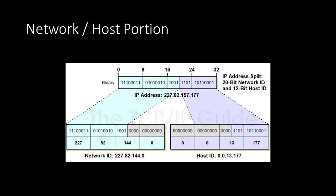IP addresses are composed of two parts: a network portion and a host portion. The bits of an IP address designated for the network portion uniquely identify the network, while the host portion allows all devices on the network to share the same prefix. By decreasing the number of bits in the network portion, you allocate more bits for the host component, allowing a single network to have more devices. The drawback is that you have fewer unique networks, which exacerbates the IPv4 exhaustion problem, especially if these hosts remain unused.